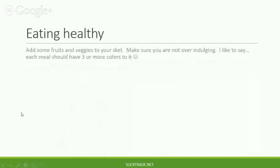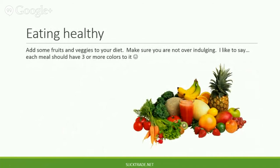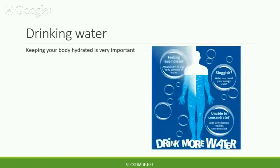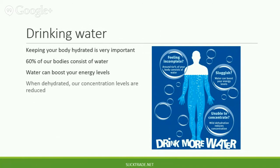Eating healthy. Add some fruits and veggies to your diet. Make sure you are not overindulging. I like to say each meal should have three or more colors to it. Drinking water — keep your body hydrated. This is very important. 60% or more of our bodies consists of water. Water can boost your energy levels, and when dehydrated, our concentration levels are reduced.